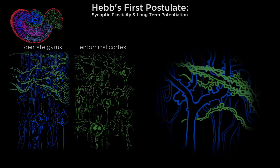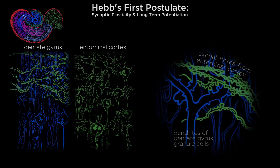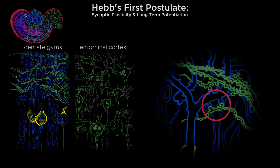Hebb had suggested that learning and memory occurs as a change at the cell-to-cell connection. As we look closer at the axonal fibers arriving from the entorhinal cortex and synapsing on the dendrites of the dentate gyrus granule cells, we can see the boutons or synaptic knobs that Hebb suggested are the site of growth or change in neuronal connections. Further, as mentioned earlier, there is input specificity — that is, only the stimulated synapse will become potentiated.